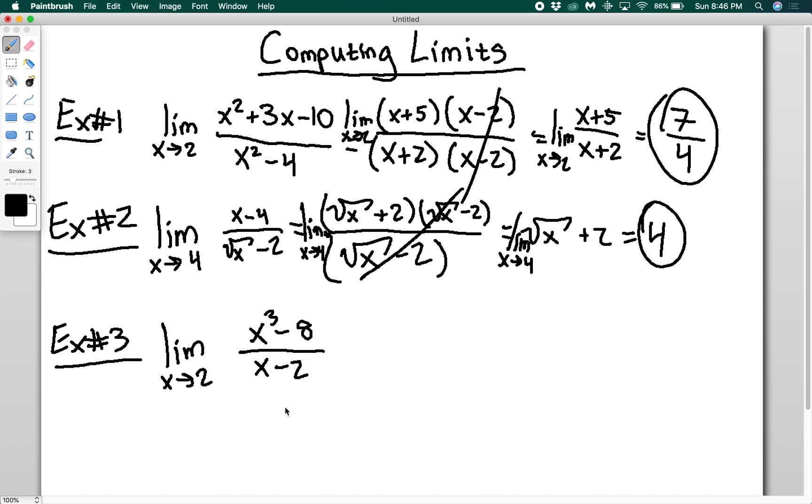If I didn't have the bottom and just had the top, that'd be fine because 2 cubed is 8, 8 minus 8 is zero, and I'd be set. I'd say the limit as x goes to 2 is zero. It's only because we have this denominator that we're going to have to do some more work.